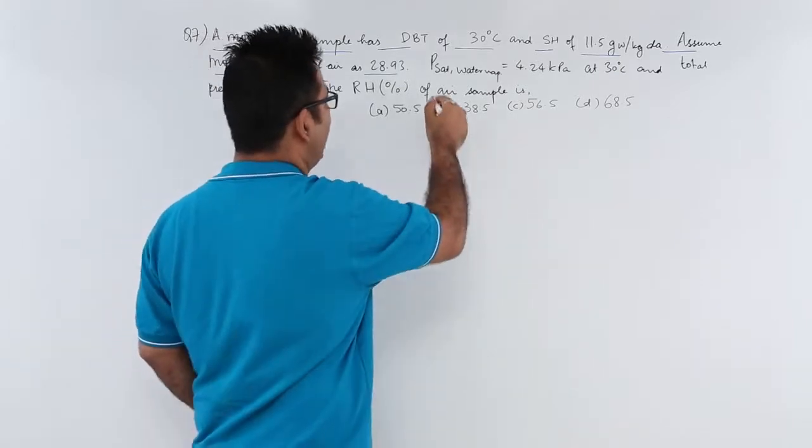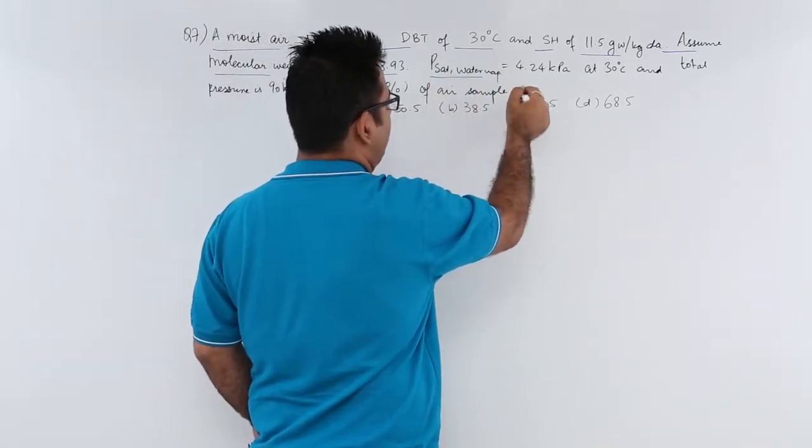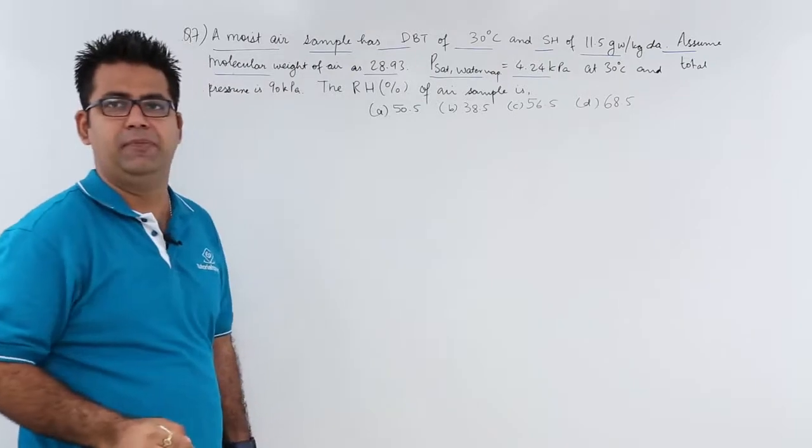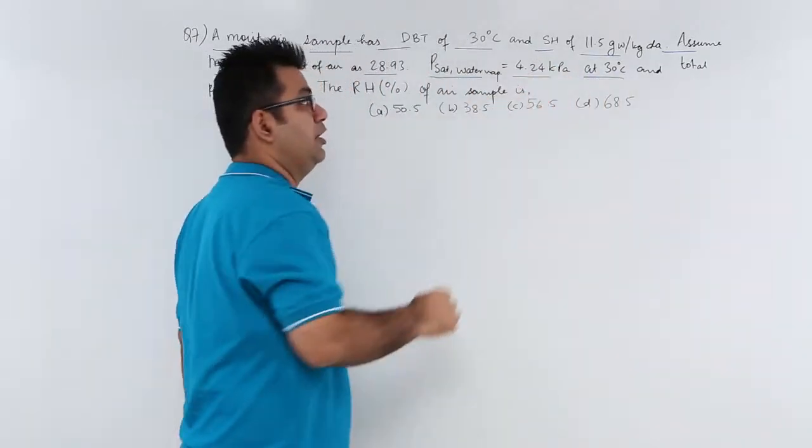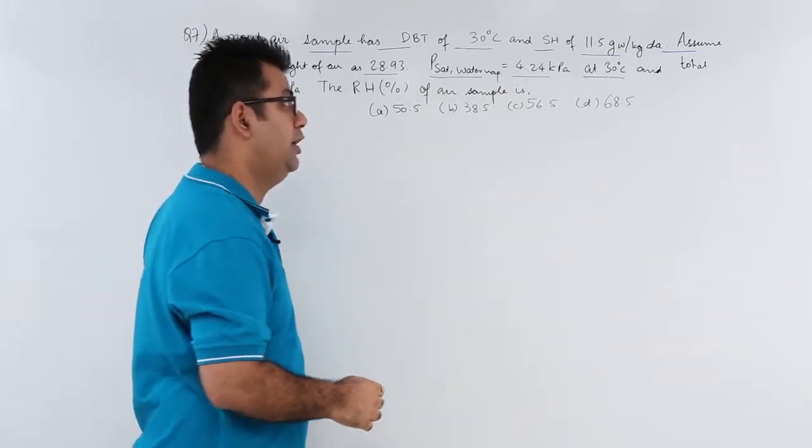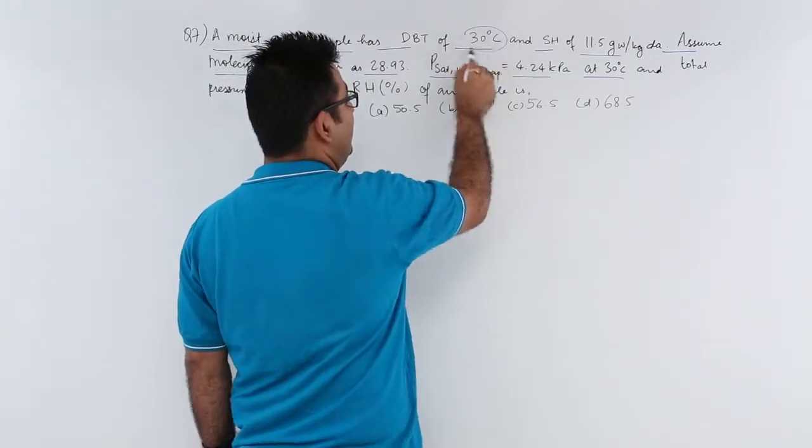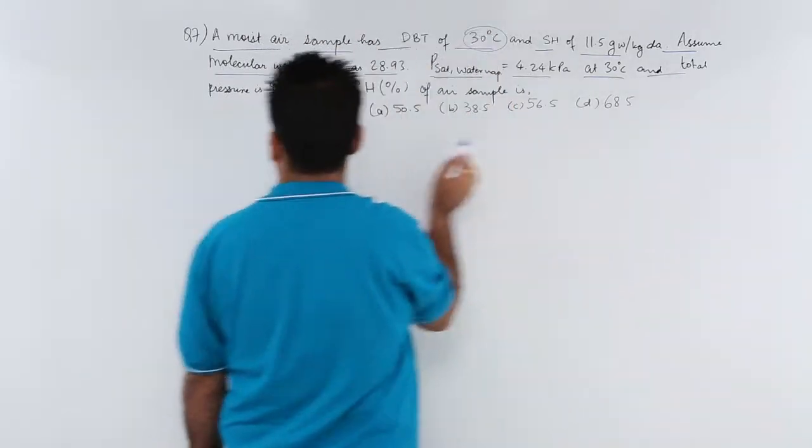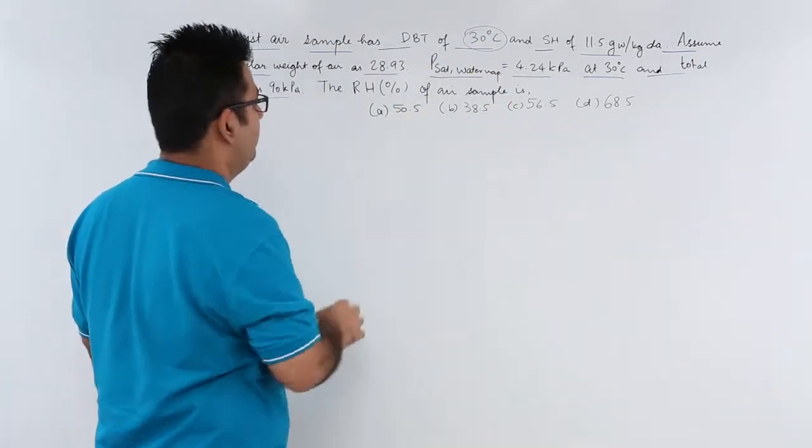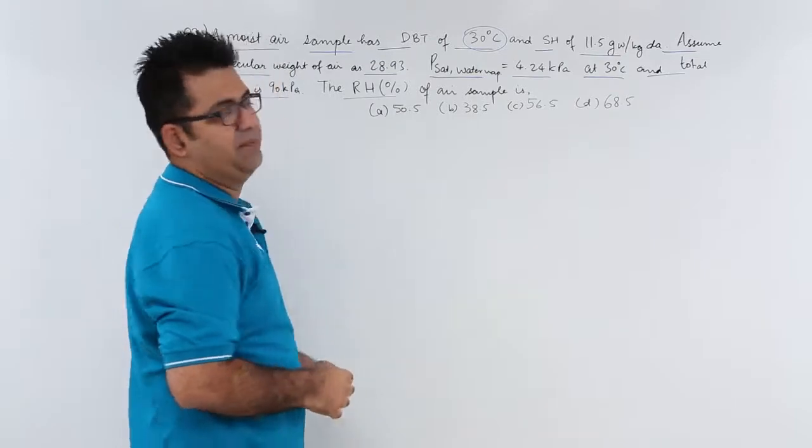The saturation water vapor pressure is 4.24 kPa and the temperature at which this saturation pressure is existing is 30 degrees. This means this is the saturation temperature and total pressure is 90 kPa. What is the RH of the air sample?